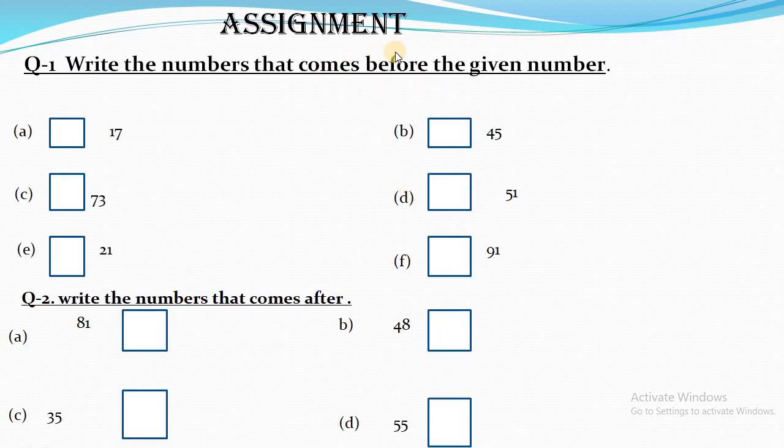Assignment: Write the numbers that come before the given numbers. A: dash 17, B: dash 45, C: dash 73, D: dash 51, E: dash 21, F: dash 91.